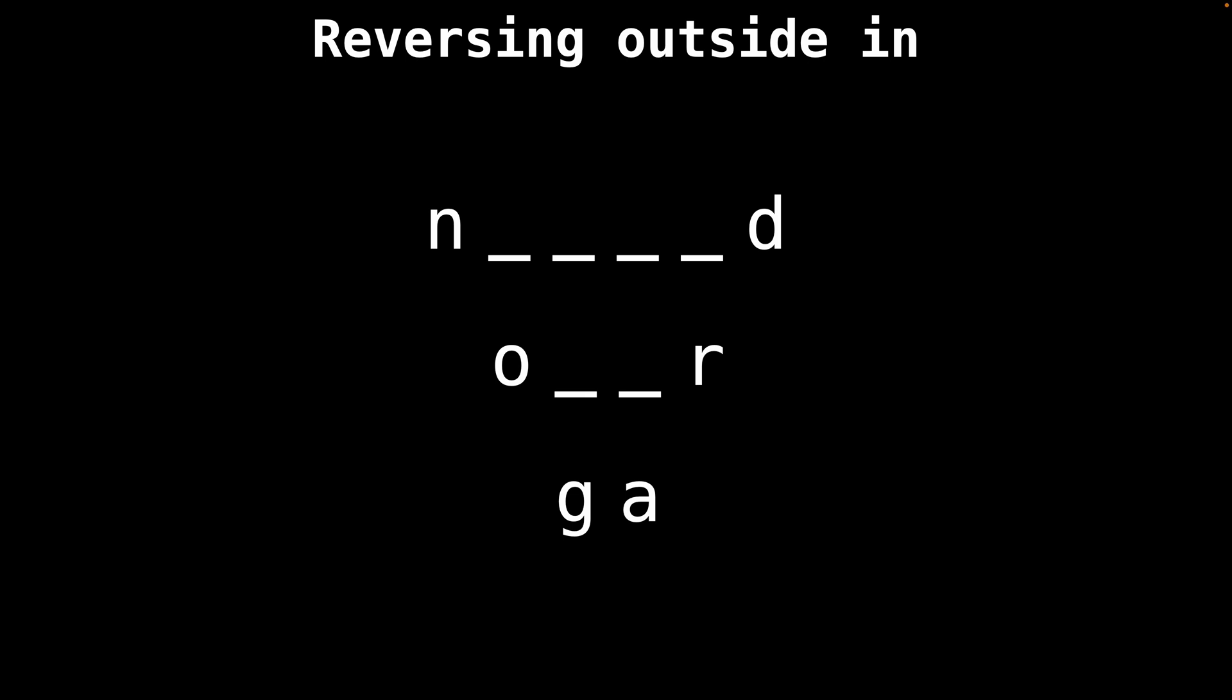Eventually, there are no more characters to swap. So the recursion would unwind and we would construct the reversed string. And that's another way to reverse a string using the outside in method.